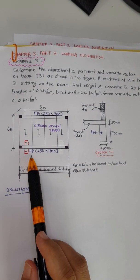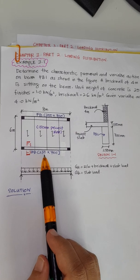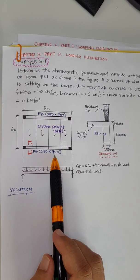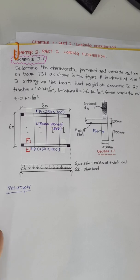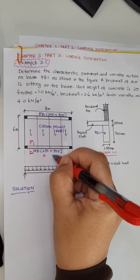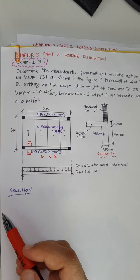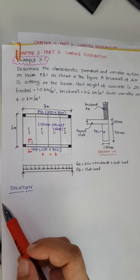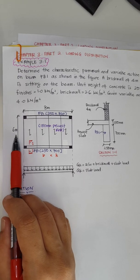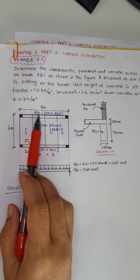The size of the beam is 250 mm width (B) and 700 mm depth (H), read as B times H. The dimensions of the slab are 6 meters and 8 meters.